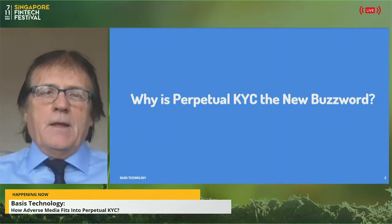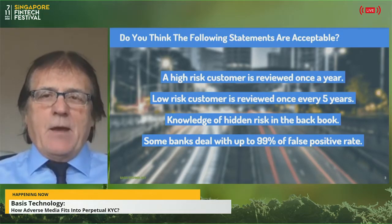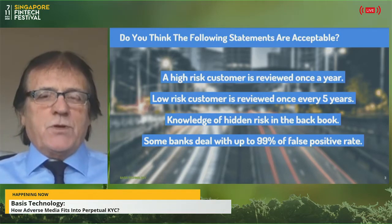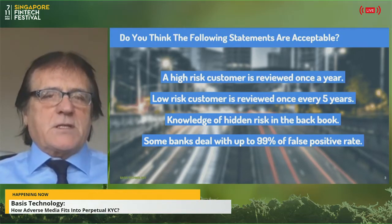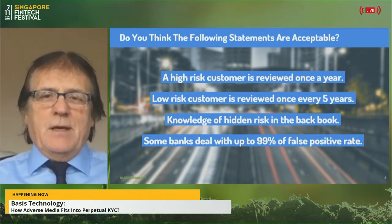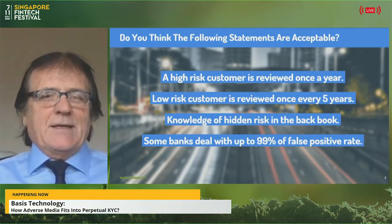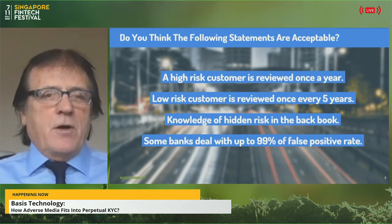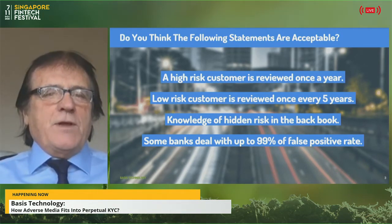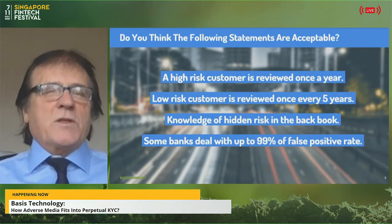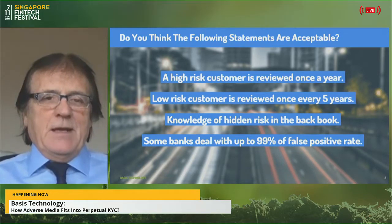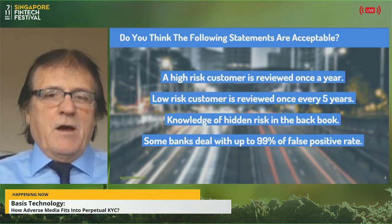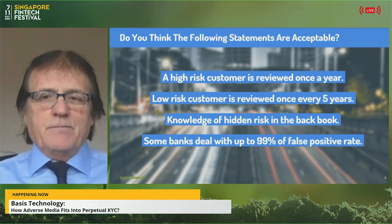I want to make a few statements and ask if you think they're acceptable — because I don't think they are. A high-risk customer is reviewed just once a year. A low-risk customer is reviewed once every five years. Just because someone was low risk a year or two ago doesn't mean they're not high risk now. And what's alarmed me lately is banks are getting over 99 percent false positives — that's scary.